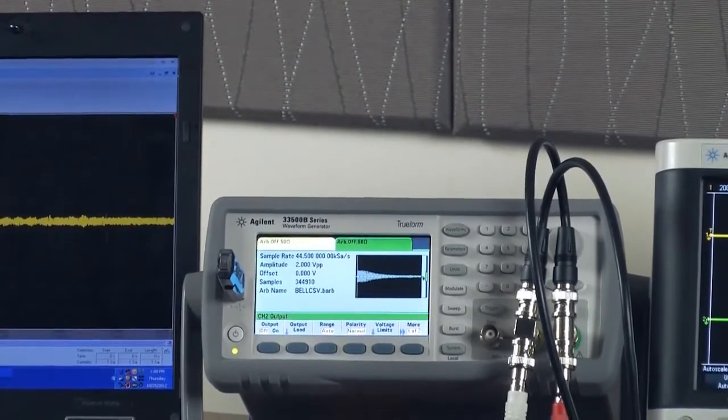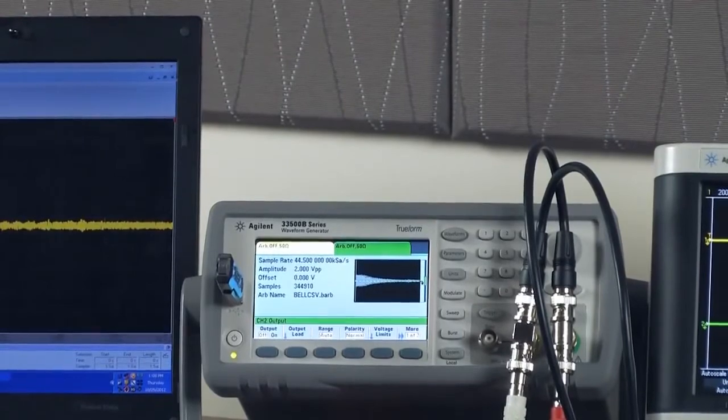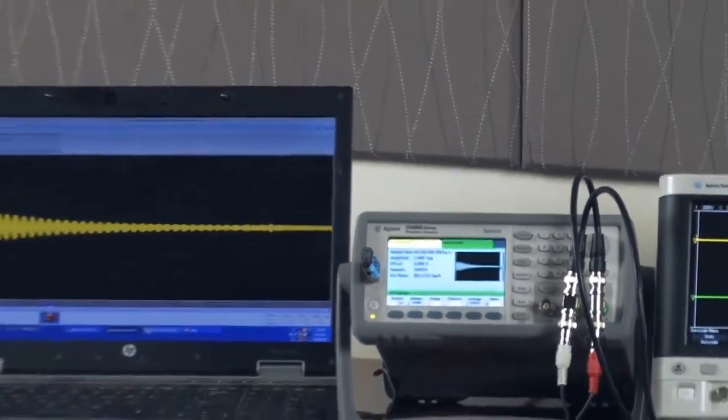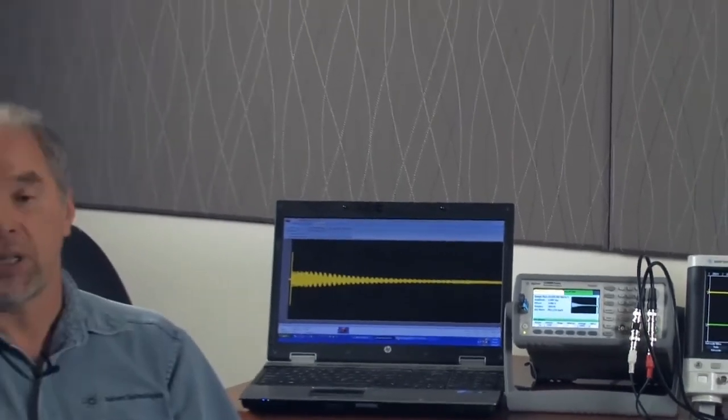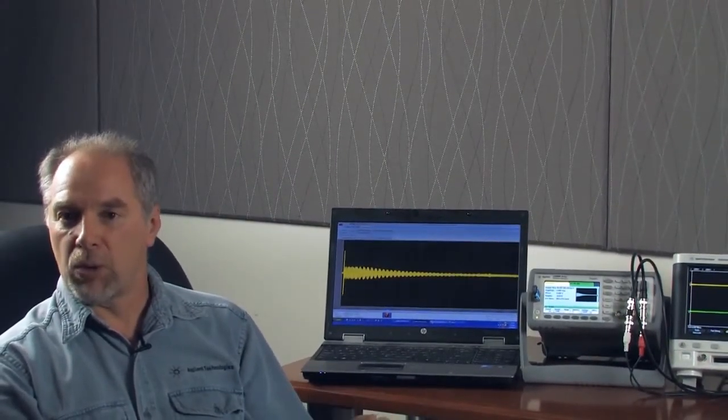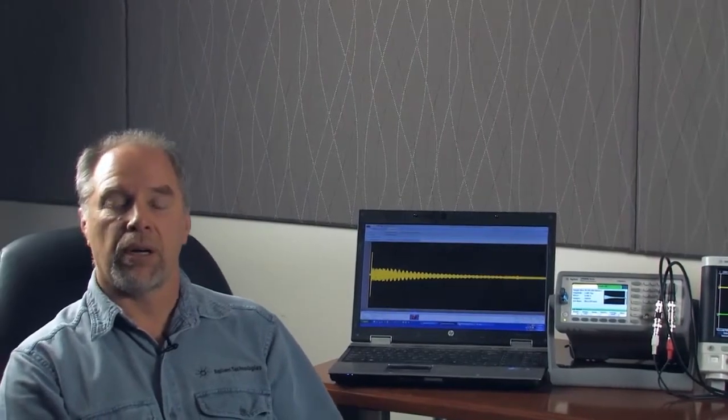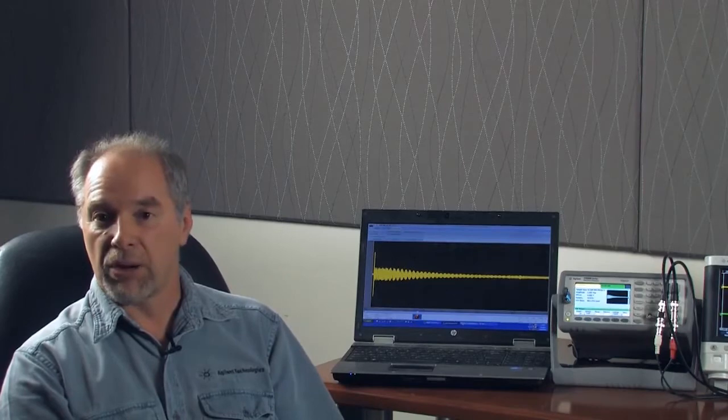When you load two different ARBs onto the function generator, what you'll notice is the ARBs will not be in synchronization. So I have some speakers, and we'll hear the bell with channel one and channel two being out of sync, and your ear will pick up the difference. Then we have a feature on our function generator that allows you to synchronize channel one and channel two.